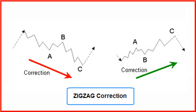A zigzag correction has three waves. Wave A is an impulse wave or starting wedge impulse wave. Wave B can be any kind of correction pattern, and wave B is smaller than wave A. Wave C is an impulse wave or an ending wedge impulse wave. A simple zigzag pattern has three waves; a double zigzag pattern has seven waves, meaning two simple zigzags separated by an X wave. A triple zigzag has 11 waves with two X waves.